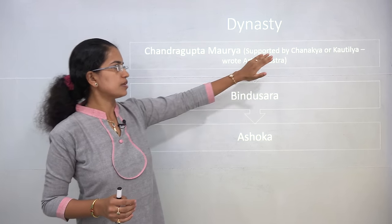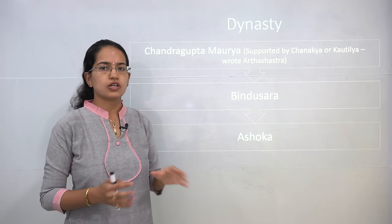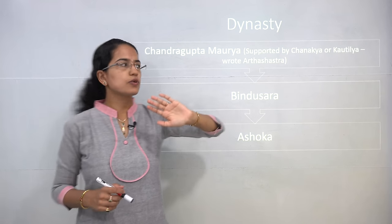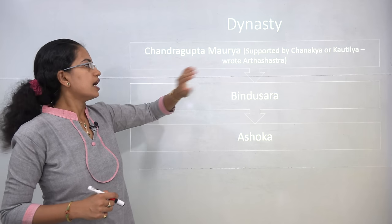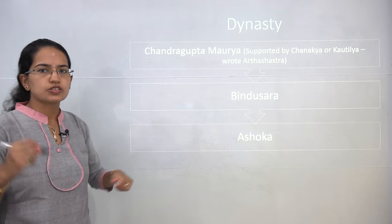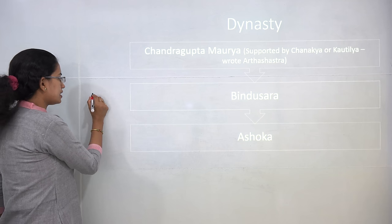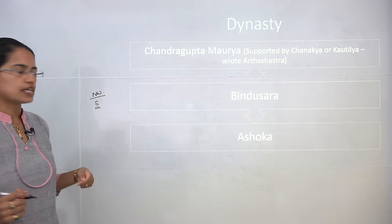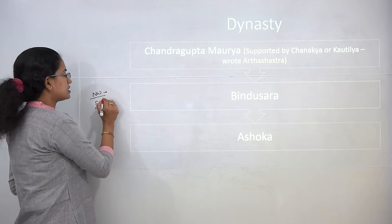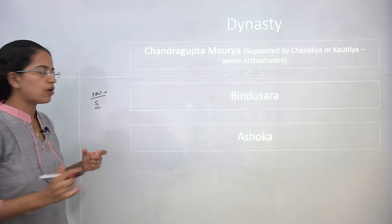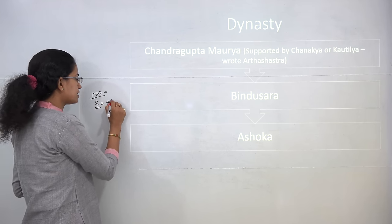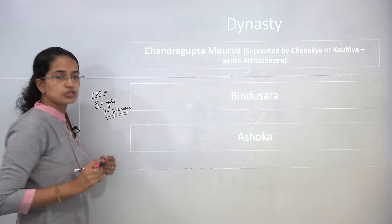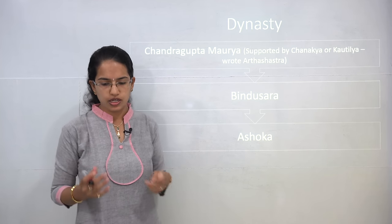Chandragupta Maurya was supported by his key advisor, Chanakya, also known as Kautilya. He wrote the book known as Arthashastra. In it, he explained various techniques to fight war. He also described India as divided into Northwest and South — in the Northwest, blankets were common trade goods, while in South India, gold and precious stones were important.